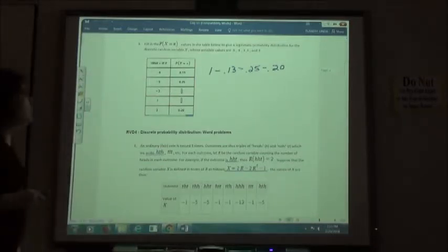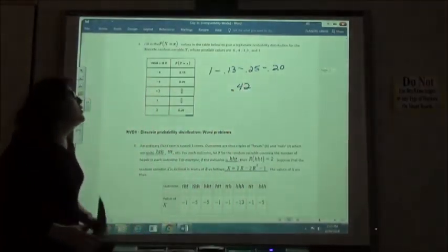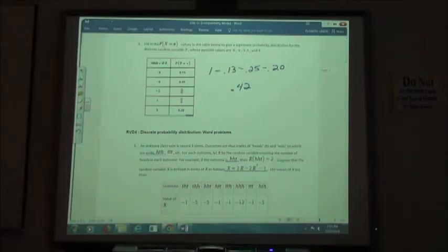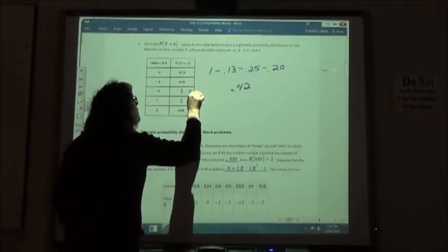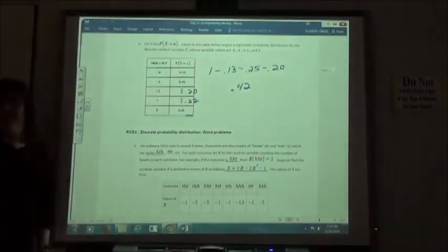0.42. And so if I have 0.42 and I need to distribute that to those two values there, which two numbers might I possibly use? 0.20 and 0.22 would be good choices.